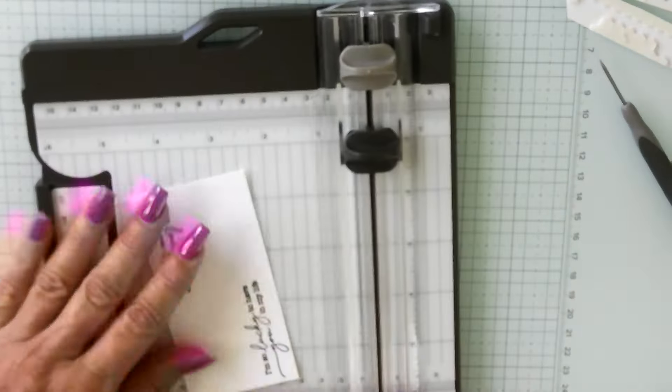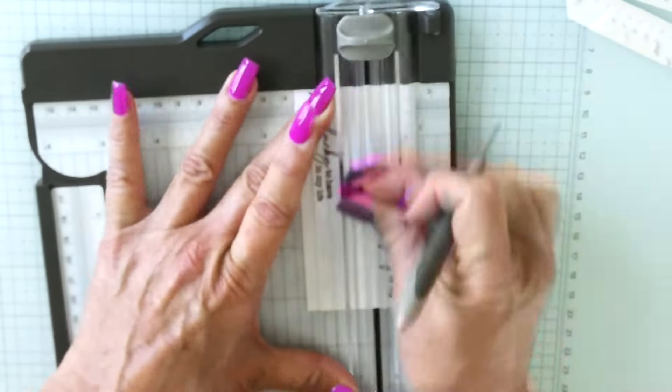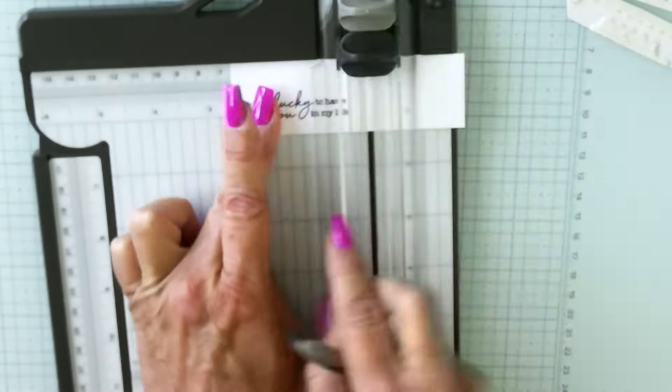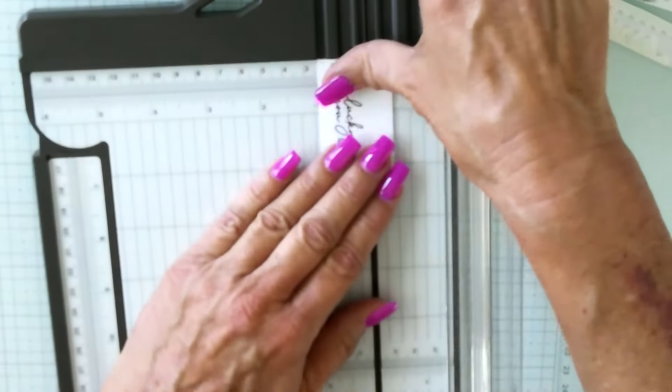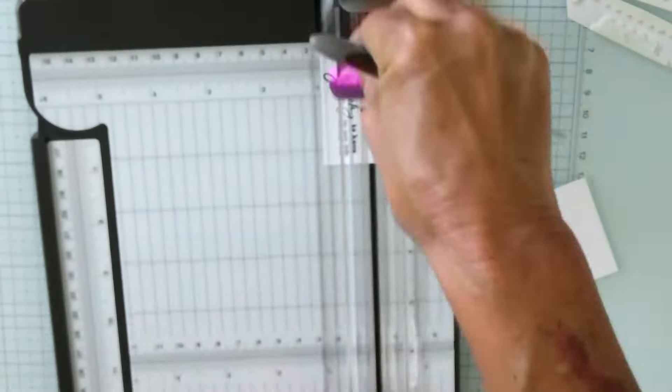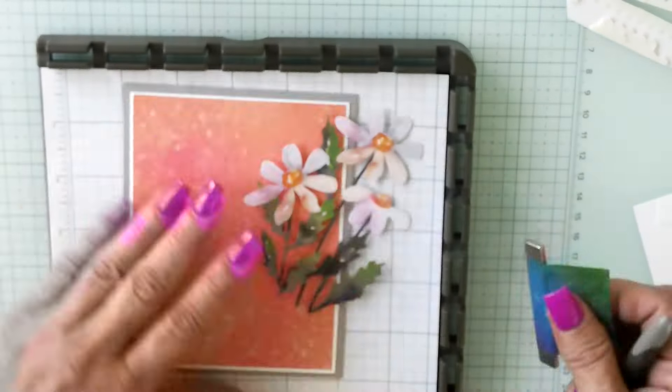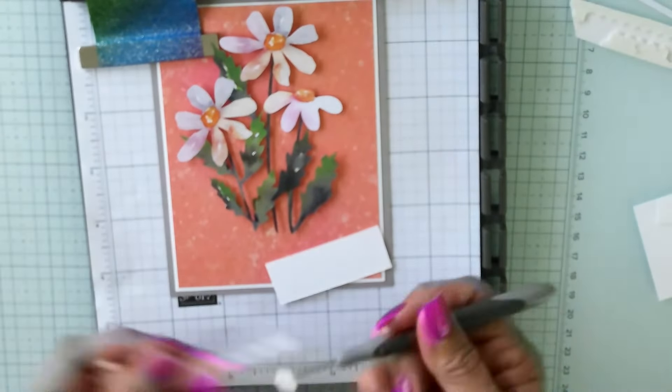That was my week and why I only got two cards done. Now I'm cutting the sentiment down. If I remember, the width is going to be seven-eighths of an inch and the length on both sentiments is going to be two and a quarter.